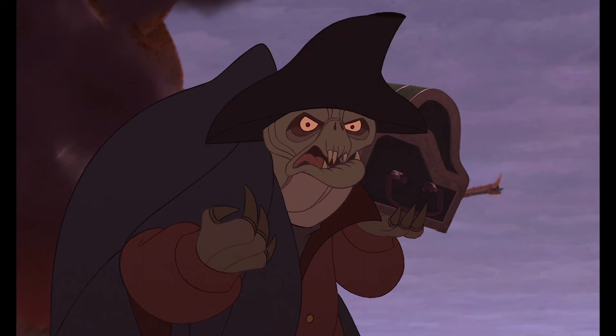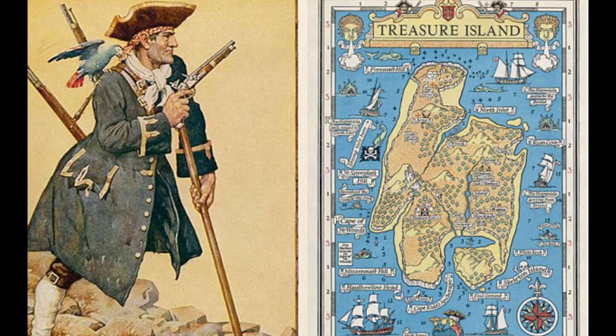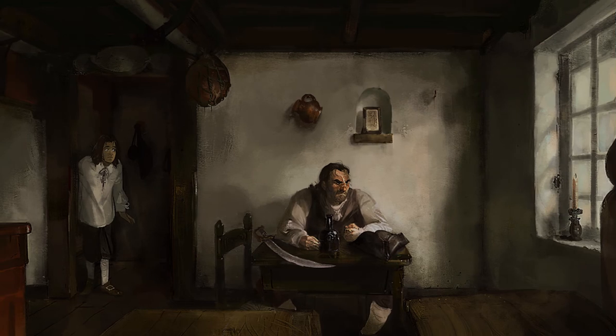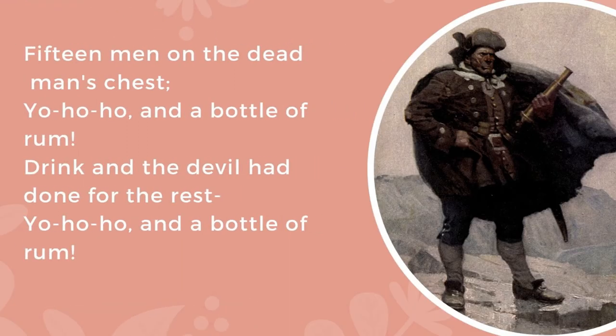He pays Jim a small amount of money to watch out for other seamen, especially a sailor with one leg. Billy Bones only wanted rum, plain food, and watched the ships go by. Every day he used to drink a good deal of rum and scared other guests by singing wild sea songs. Sometimes he would force everyone to hear his stories and join in the song: 'Fifteen men on the dead man's chest, yo-ho-ho and a bottle of rum. Drink and the devil had done for the rest, yo-ho-ho and a bottle of rum.'